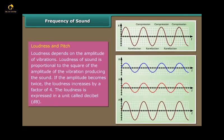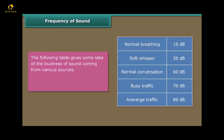Loudness and pitch. Loudness depends on the amplitude of vibrations. Loudness of sound is proportional to the square of the amplitude of the vibration producing the sound. If the amplitude becomes twice, the loudness increases by a factor of four. The loudness is expressed in a unit called decibel dB. The following table gives some idea of the loudness of sound coming from various sources. Above 80 dB, the noise becomes physically painful.